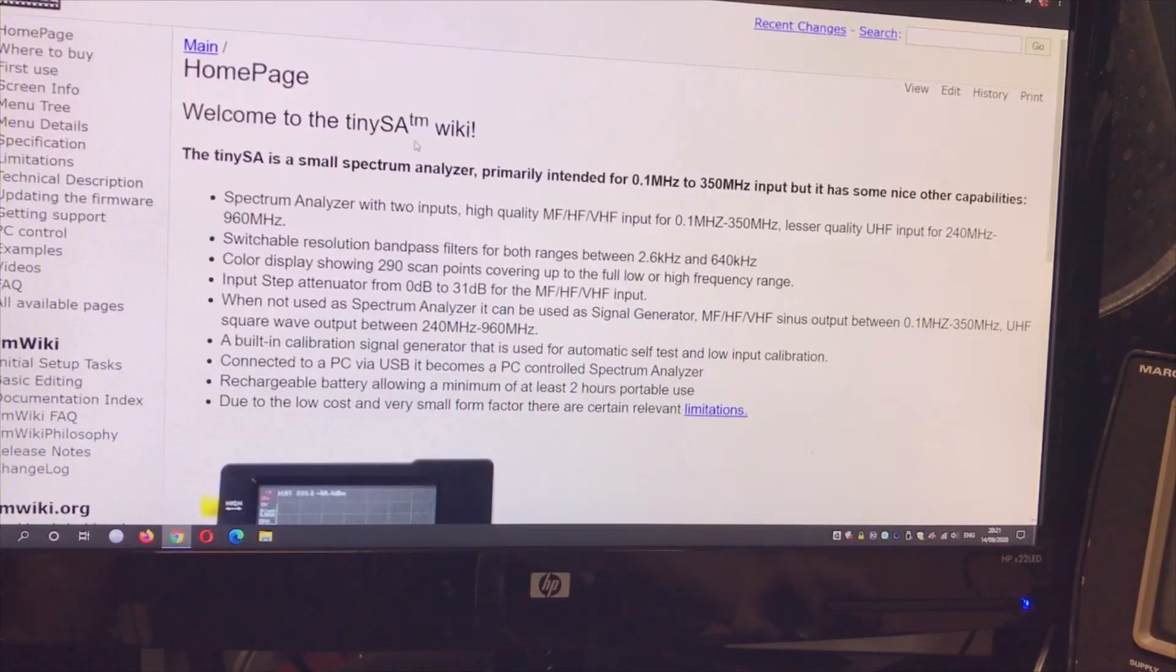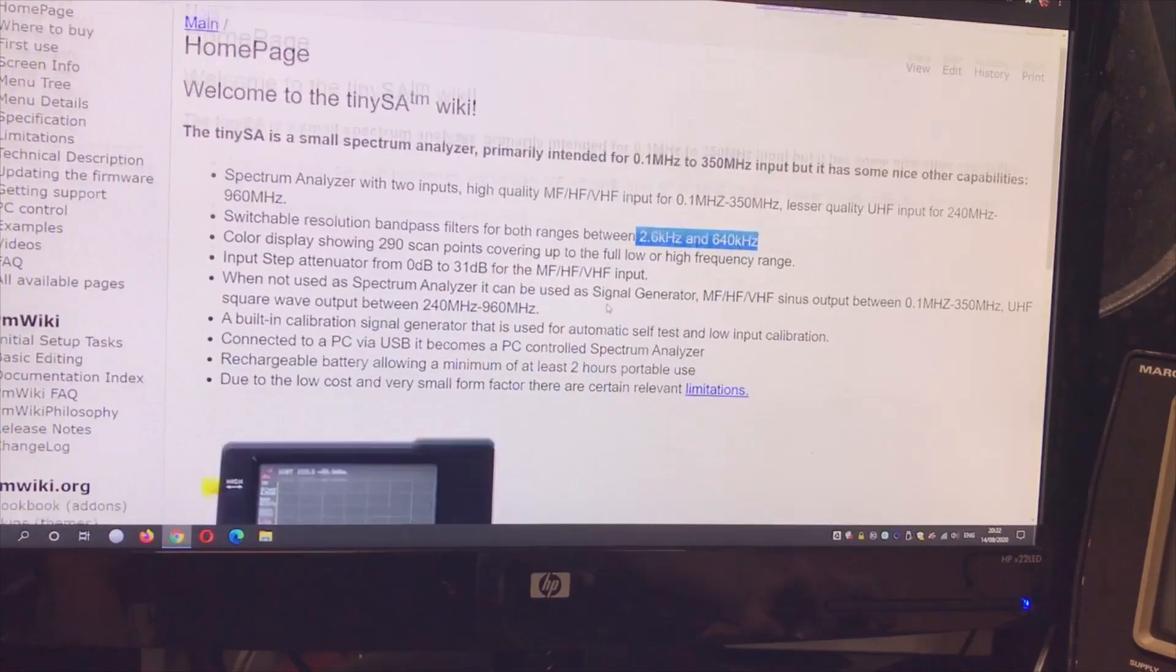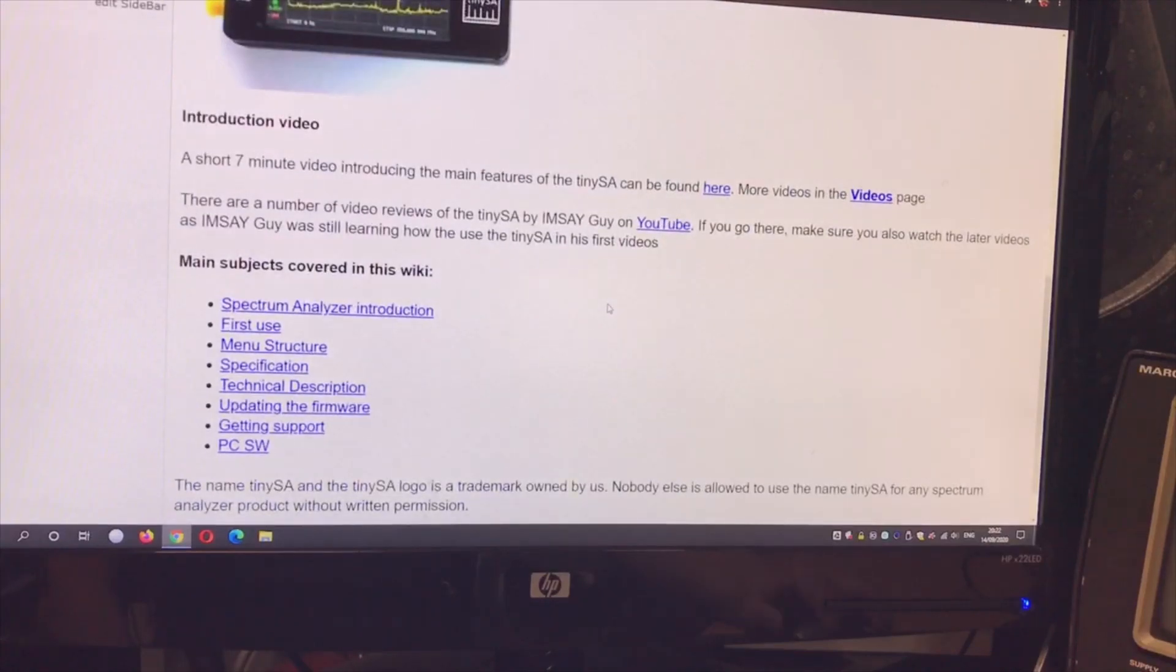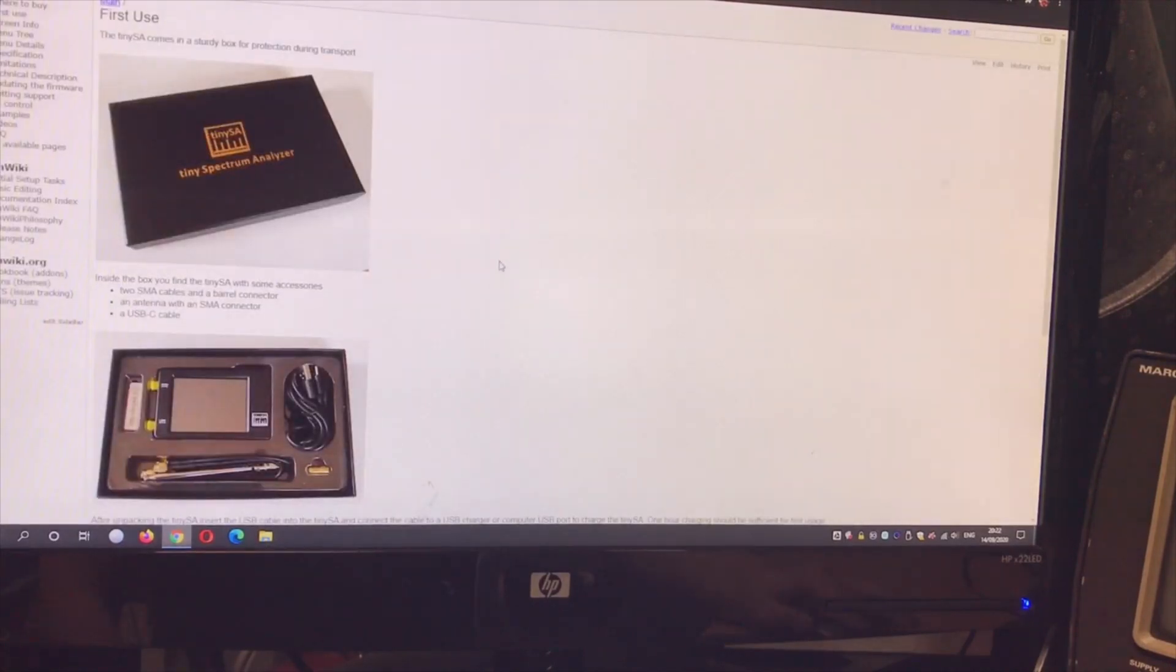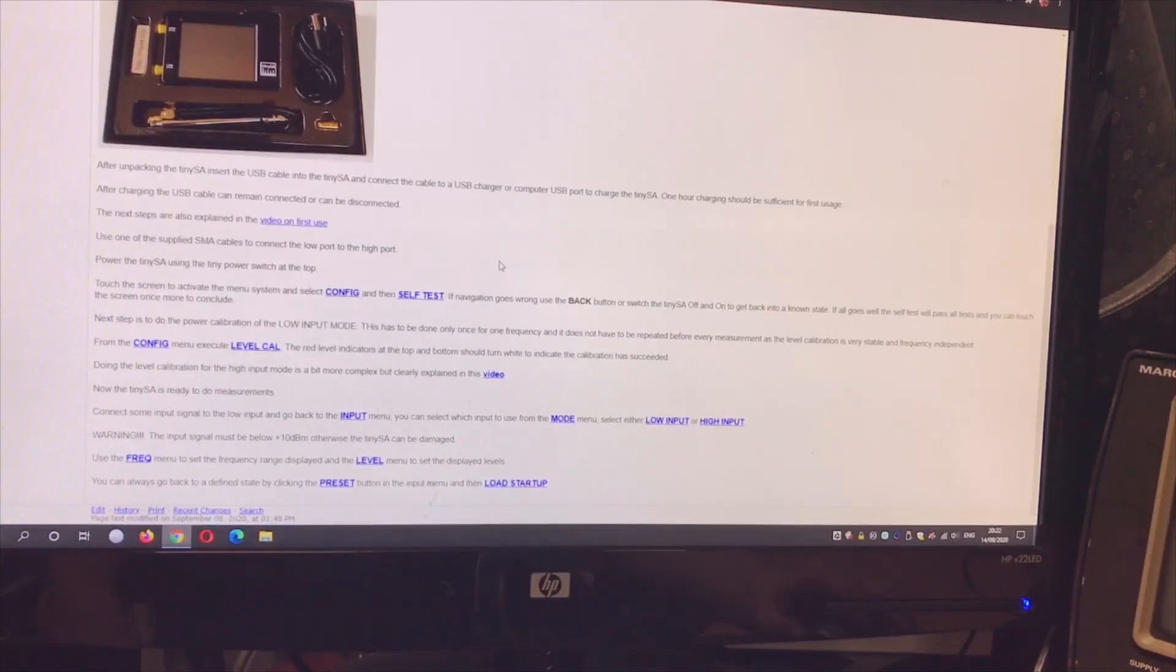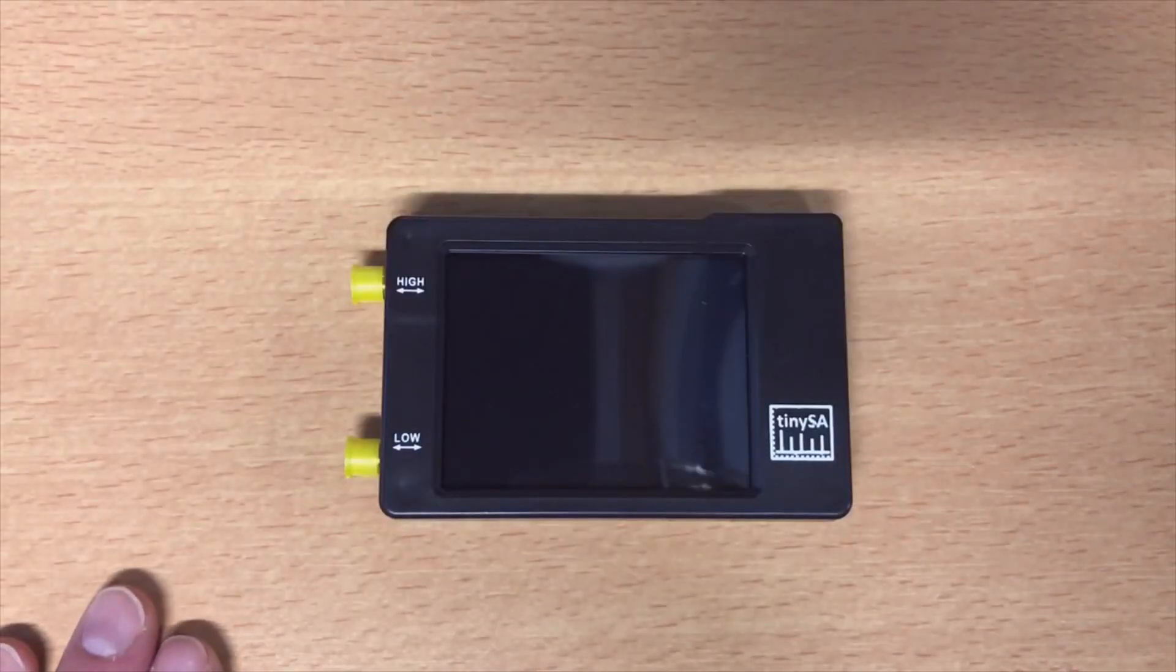I'm going to have a little look at the website now to see if we need to do some calibration of some sort. But yeah the first thing what you do is not go to the website, you of course gonna switch it on. Okay here we have the website. Small spectrum analyzer 0.1 to 350. The lower input is 0.1 to 350, and there is a second input that does 240 to 960. First use, so let's go to first use.